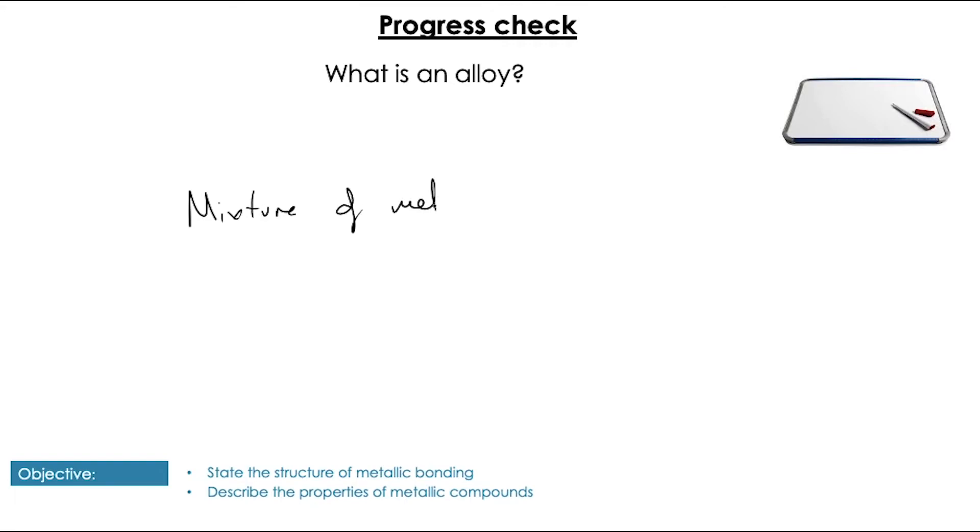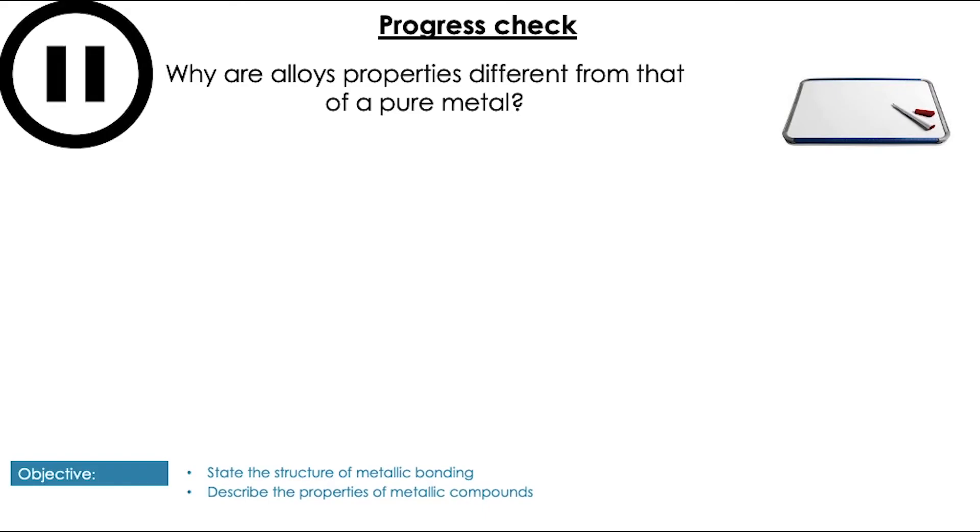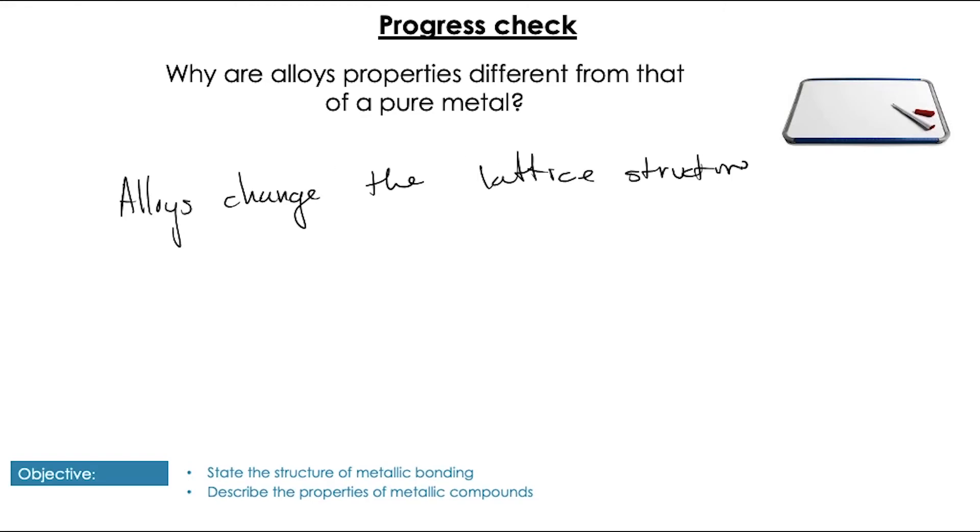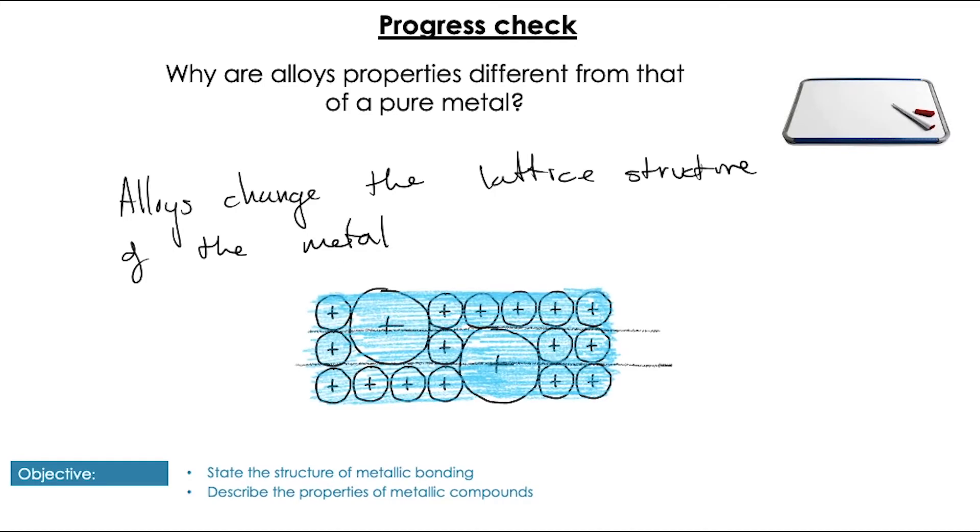Pop them up! It is, of course, a mixture of metal atoms, which can have non-metal atoms also included. Next question, why are alloy properties different from that of a pure metal? Pause the video to have a go at that. Pop them up! Of course, as we've discussed, alloys change the lattice structure of the metal, which changes those macroscopic properties of the metal.